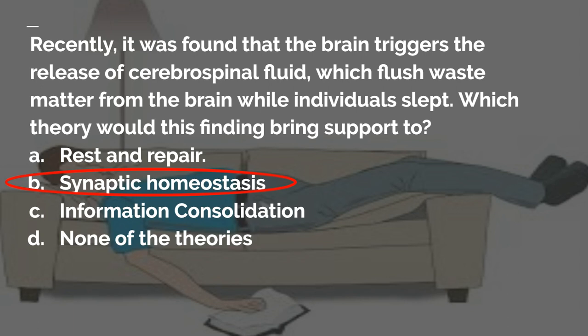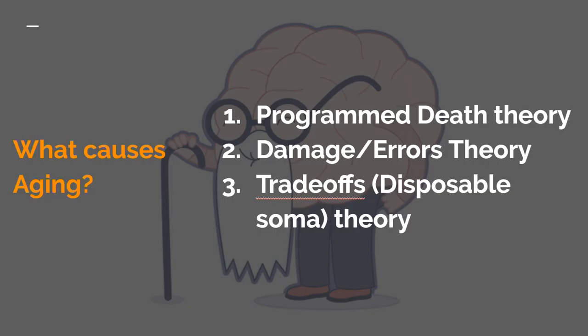Here's another example of a case study I've used, one about aging. What causes aging? I present students with three theories: number one, the idea that aging is actually programmed into our bodies from the start. Aging may also be due to a slow buildup of damage, eventually leading to organ or body system failure — known as the damage errors theory of aging. There's also a theory that our body is trying to optimize energy use, so some systems are compromised because they have less energy, known as the trade-off or disposable soma theory.